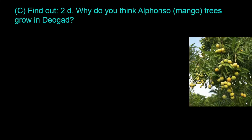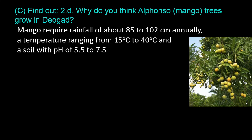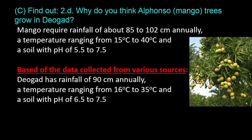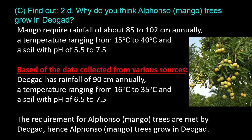Question C.2.D: Why do Alphonso mango trees grow in Devjad? Mango requires rainfall of about 85 to 102 centimeters annually, a temperature ranging from 15 to 40 degrees Celsius, and a soil pH of 5.5 to 7.5. Based on data collected from various sources, Devjad has rainfall of 90 centimeters annually, a temperature ranging from 16 to 35 degrees Celsius, and a soil pH of 6.5 to 7.5. The requirements for Alphonso mango trees are met by Devjad, hence Alphonso mango trees grow in Devjad.